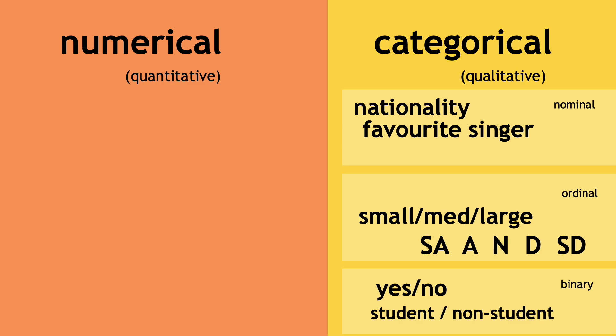For numerical variables, we can have either discrete or continuous data. Discrete variables can only take a finite number of possibilities, or we might say they're countable. For example, the number of children you have can be zero, one, two and so on, but it wouldn't make sense to say 1.23 or four fifths.